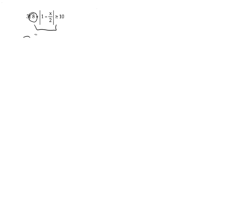When it comes to absolute value inequalities, you want to follow the same steps as before. You're going to get your absolute value argument and isolate it. Since we have this number in the front, we want to subtract 8 from both sides, which will leave you with the absolute value of 1 minus x over 2 is greater than or equal to positive 2.